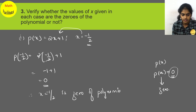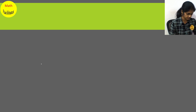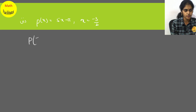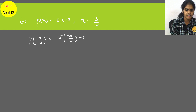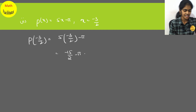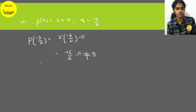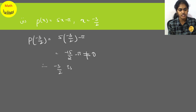For the second case, p(x) = 5x minus π at x = −3/2. Substituting p(−3/2): 5 into (−3/2) minus π equals −15/2 minus π. This value is not equal to 0. Therefore, −3/2 is not a zero of the polynomial p(x).